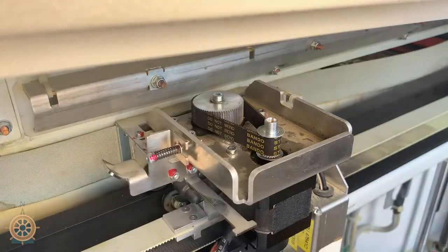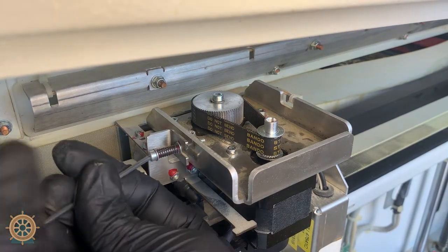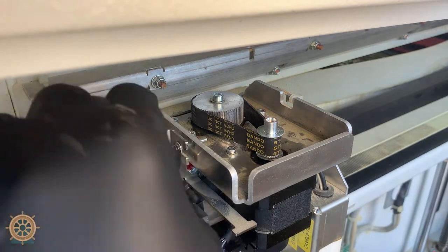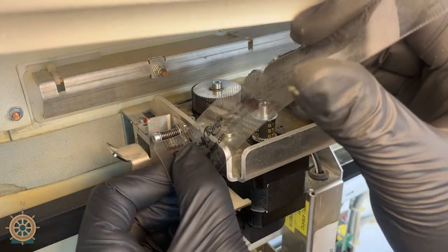And then, just like the 300, you want to adjust this tensioning screw to get a tight belt again. Measure it 0.43 inches, washer to washer.